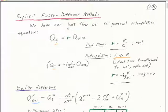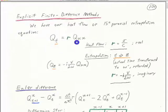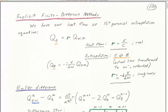We have either 1D heat flow or a 15-degree paraxial extrapolation equation. The heat flow equation is: dQ/dt equals this constant r times d²Q/dx², where r is real — it's the transmissivity over the heat capacity, sigma over c. For wave extrapolation, instead of t we go to z, and r is imaginary.